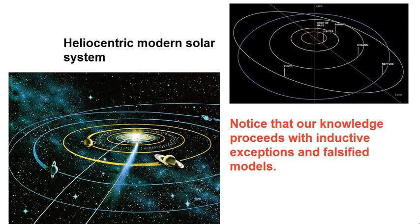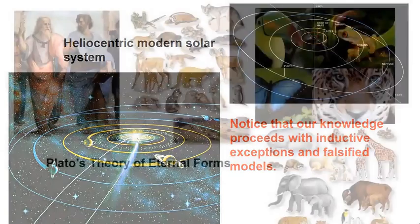Today we have a fairly accurate model that can predict where planets will be a million years out, and explains a broad range of phenomenon. But it's still not capital T truth. It's just a highly predictive, highly useful model.